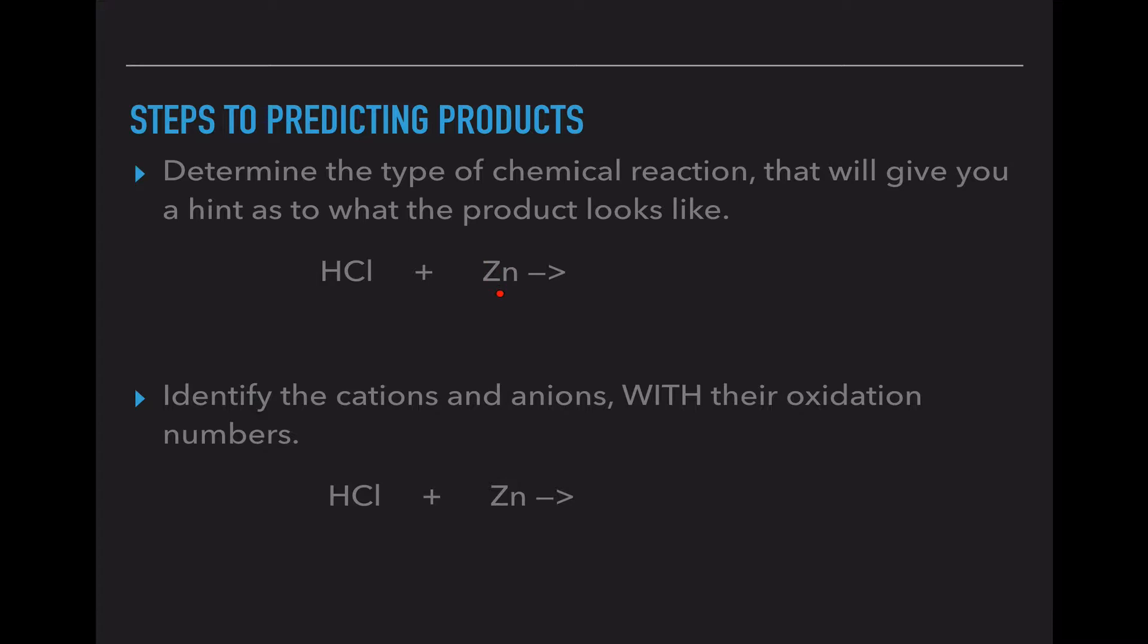Now zinc is actually a transition metal so we're going to kind of cheat a little bit here in the next step. But notice we have a compound and a single element. That means that this is a single replacement reaction. So zinc is actually going to swoop in and pair up with chlorine instead of having hydrogen there. So right underneath, just to help us out, I'm gonna write single replacement to remind us.